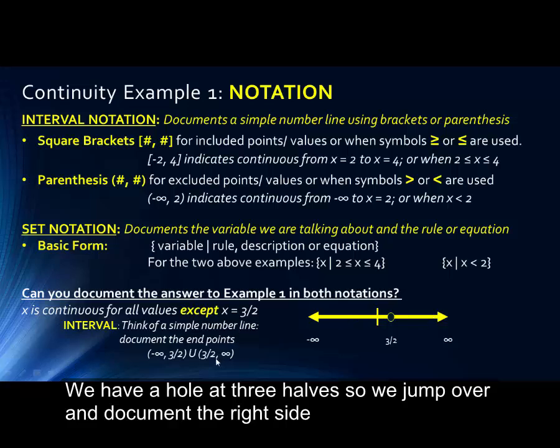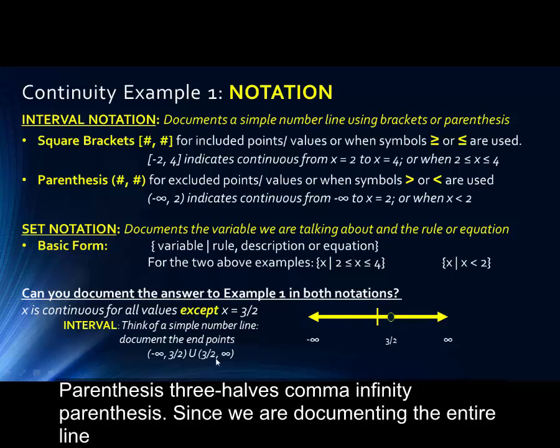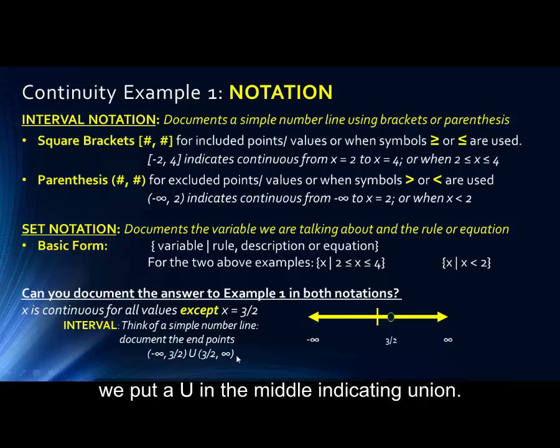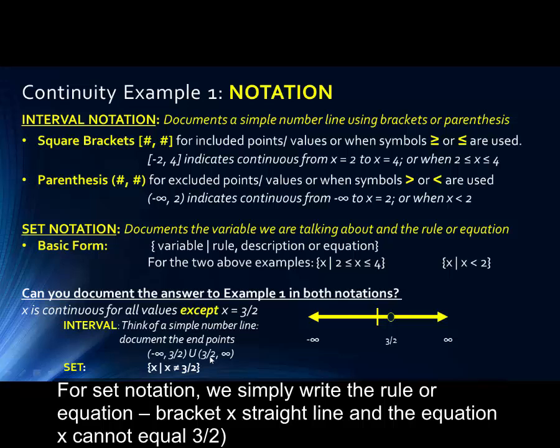So we jump over and document the right side: parentheses, three halves, comma, infinity, parentheses. Since we are documenting the entire line, we put a u in the middle, indicating union. For set notation, we simply write the rule equation: bracket, x, straight line, which means defined as, x does not equal three halves, bracket.